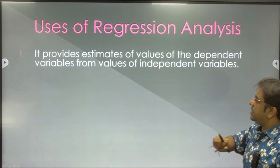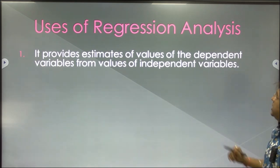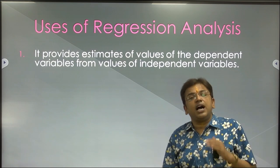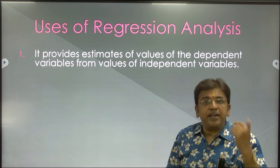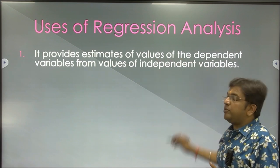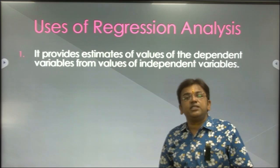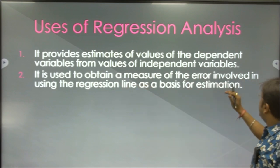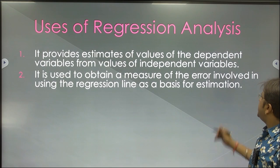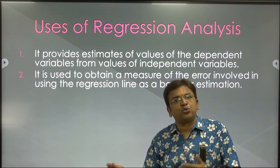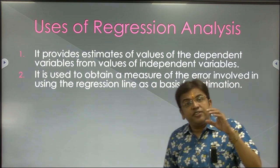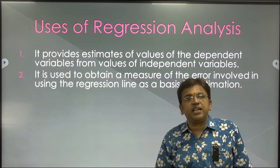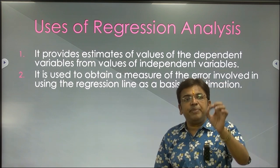What are the uses of regression analysis? First, it provides estimates of the dependent variable from values of the independent variable. By the help of regression analysis, a researcher knows about the independent variable because the dependent variable is fixed. Second, it is used to obtain the measure of errors involved in using the regression line as the basis of estimation. There are two regression lines — x on y and y on x — and by overcoming the error, the researcher gets the best prediction.